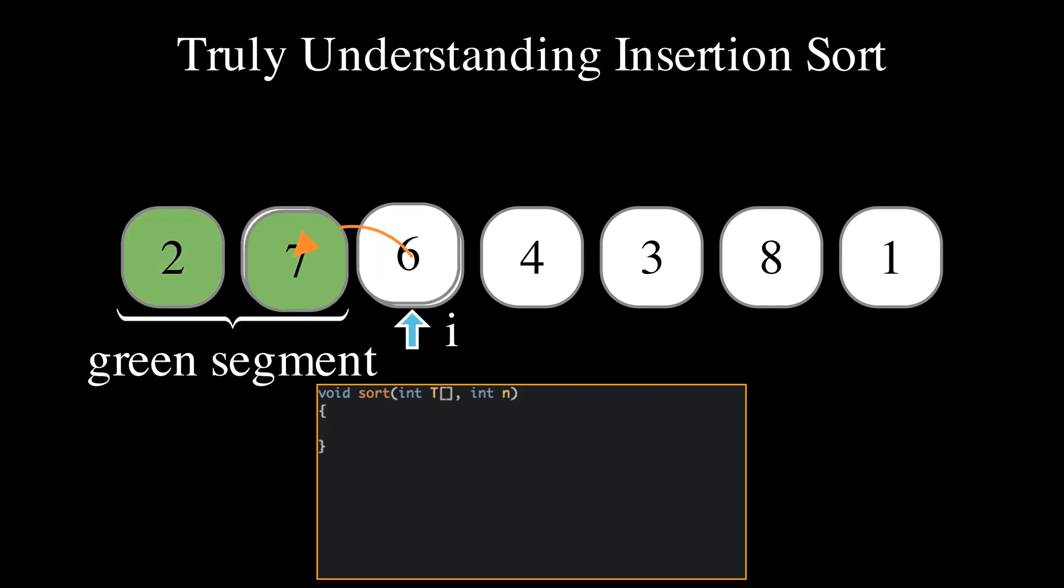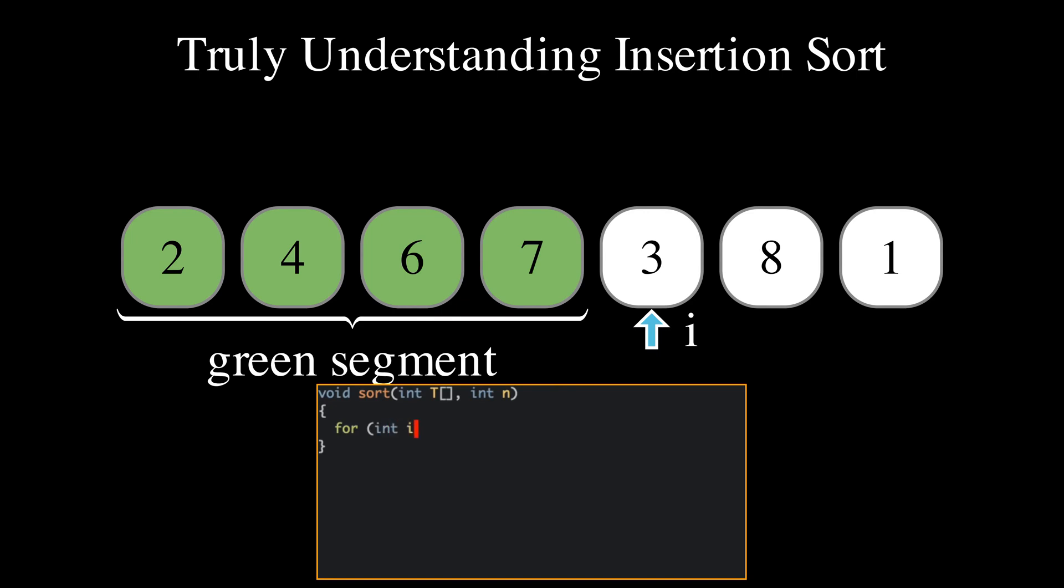We loop with the index i, remembering the size of the green segment. We store the element to be inserted, which is at position i just after the green segment, into a temporary location.